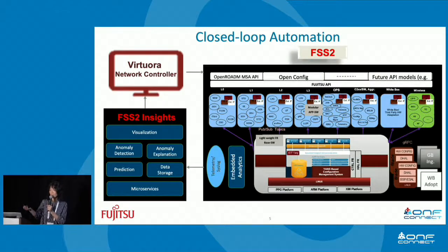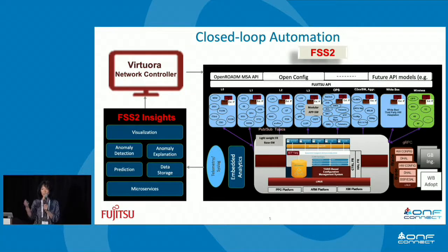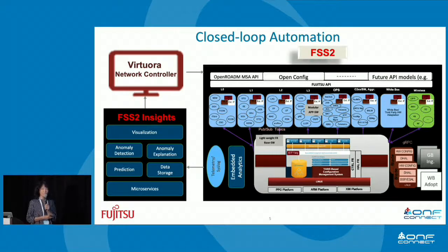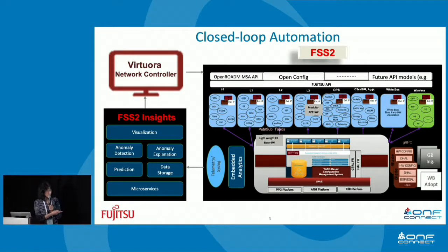On top of that — as an earlier speaker was talking about closed-loop automation — we are in the process of enhancing FSS2. Today FSS2 already has the capability to sift through enormous amounts of logs and quickly identify the root cause of issues. We're expanding it to provide anomaly detection and explanation, using machine learning as well as domain knowledge to provide prediction capabilities, then feed it up to the controller. The controller will have the network-wide view and control the individual NEs running FSS2.